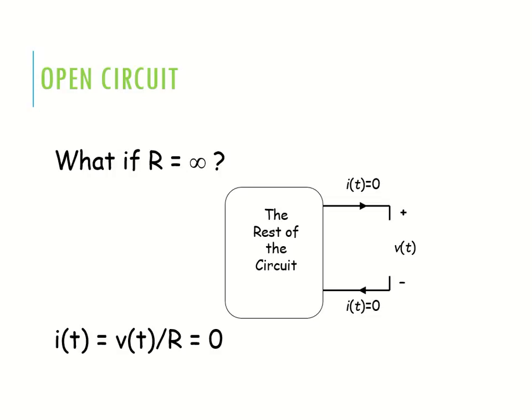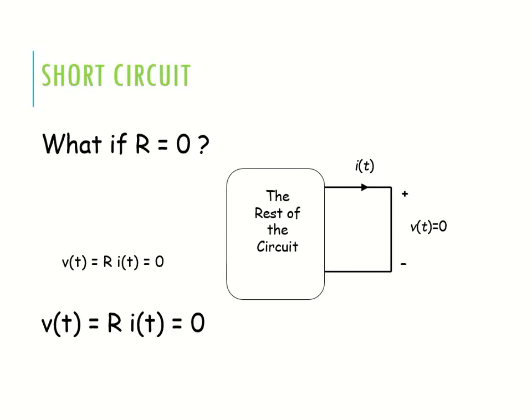When R is open, the current flowing through that resistor is zero and the voltage across the open circuit is infinite — meaning whatever voltage is applied in the circuit, the same voltage will appear at the output point. For a short circuit, R equals zero; in that case, the total current flows through R but the voltage across the short circuit is zero, because V = IR and R = 0, so V = 0.